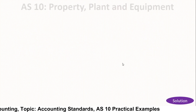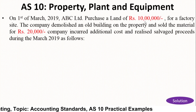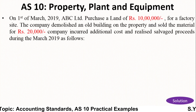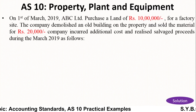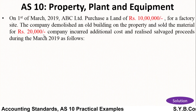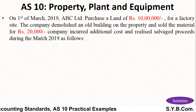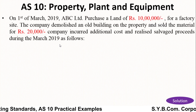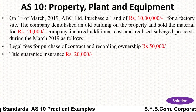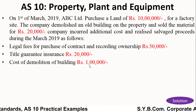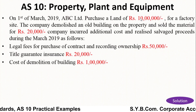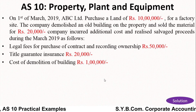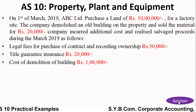Let us review the example once again. The cost of land was Rs. 10 lakh. There was a building demolished by the company, and the salvage material was sold for Rs. 20,000 — this is income and should be deducted from the asset cost. Legal fees should be added. Insurance should be added. Cost of demolition should be added. So: 10 lakh + 50,000 + 20,000 + 1 lakh − 20,000. This gives you the cost of asset, i.e., the cost of land.